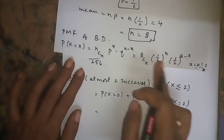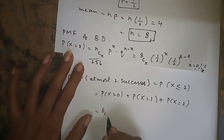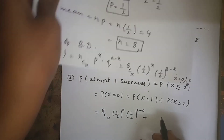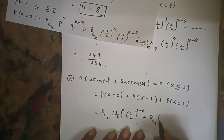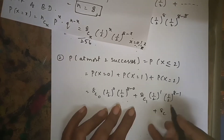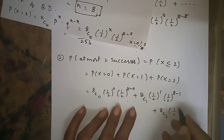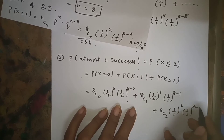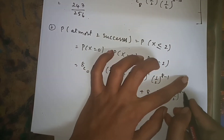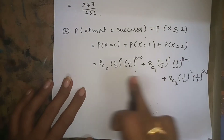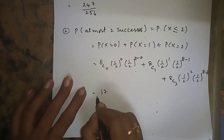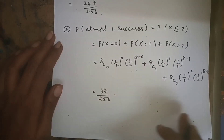Substituting into the formula: P(X ≤ 2) = 8C0*(1/2)^0*(1/2)^8 + 8C1*(1/2)^1*(1/2)^7 + 8C2*(1/2)^2*(1/2)^6. Simplifying all these values using a calculator gives 37/256.